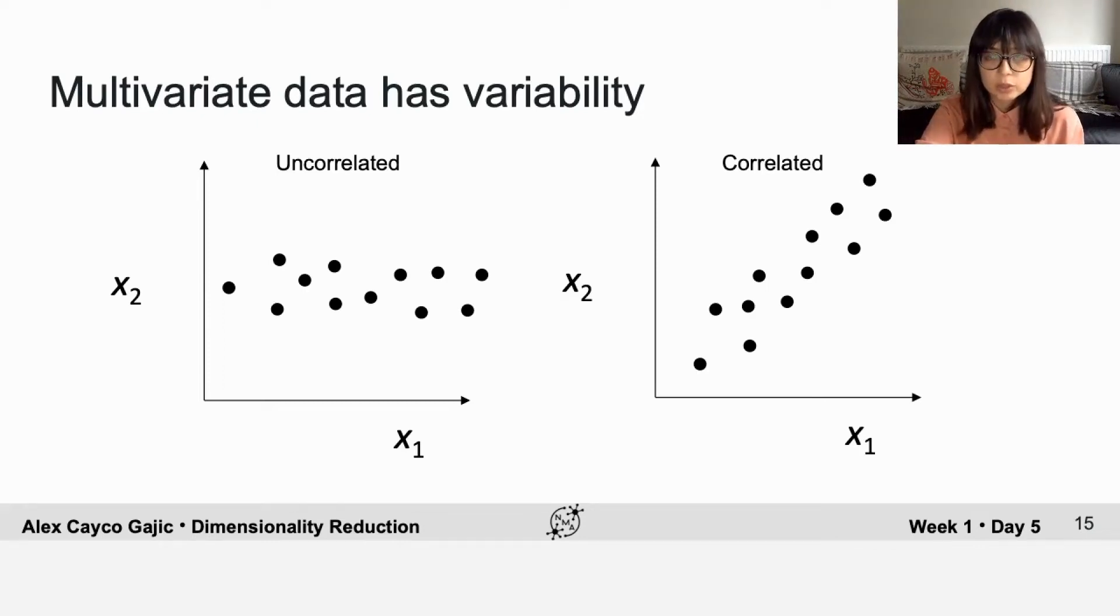Let's talk about variability. To measure the variability of each neuron individually, we can use the variance, which describes the spread of the distribution of firing rates around its average value.